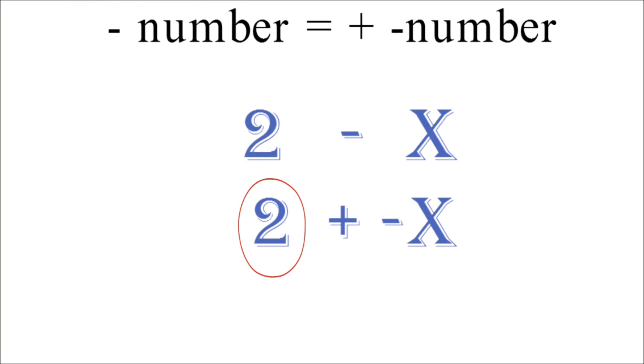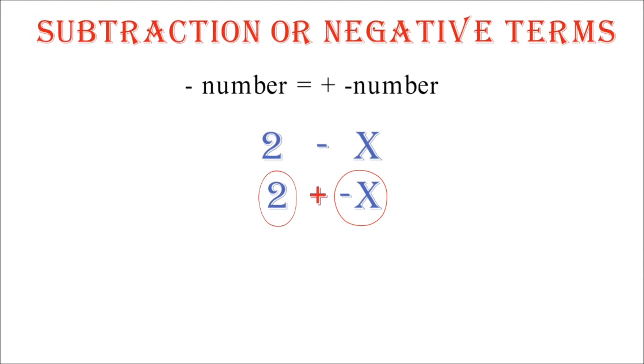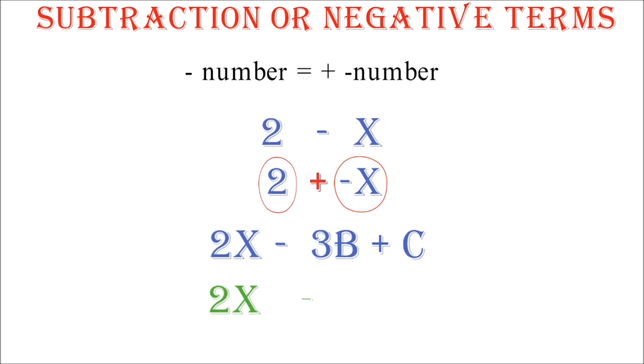So here we can still say that the 2 is one term and the minus x is another term, and they are separated by a plus sign. With this in mind, we can say that the terms in 2x minus 3b plus c are 2x, negative 3b and c. We change the minus to plus negative. Hope everything is clear up to this point.